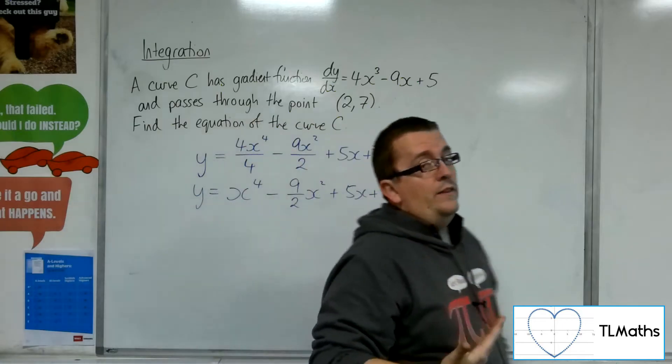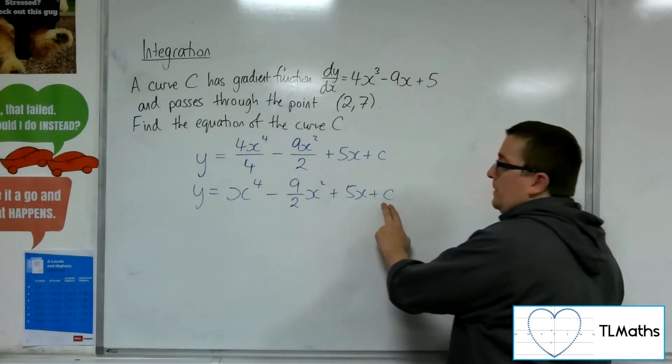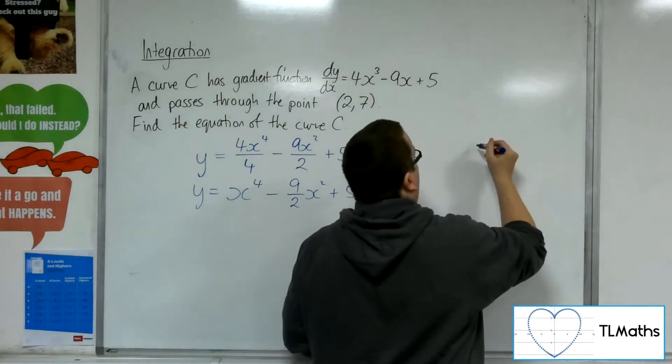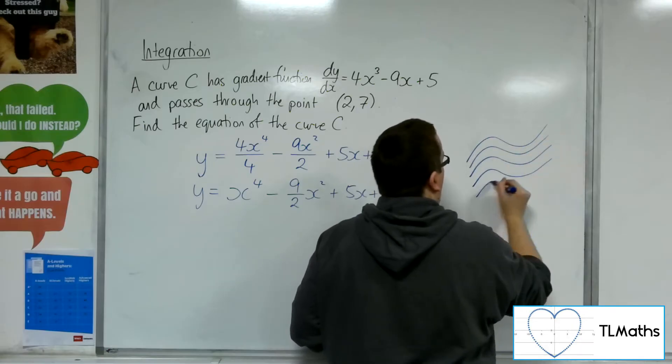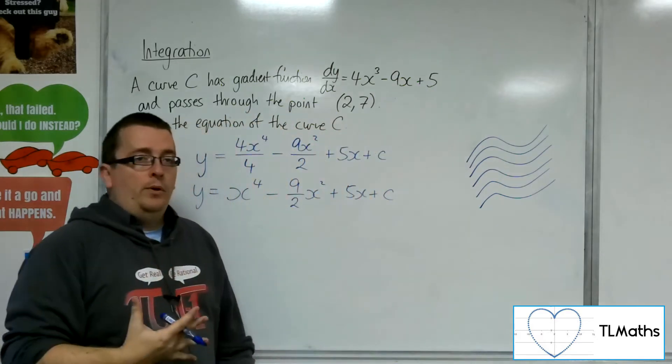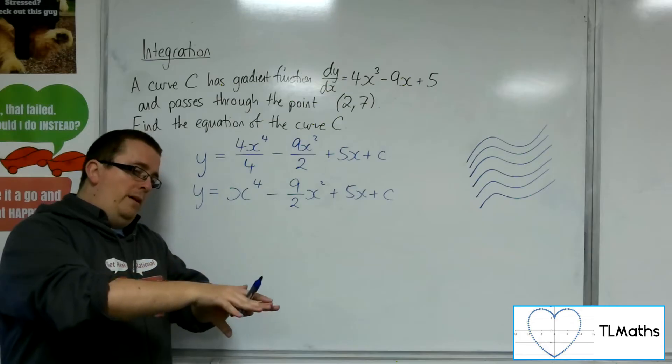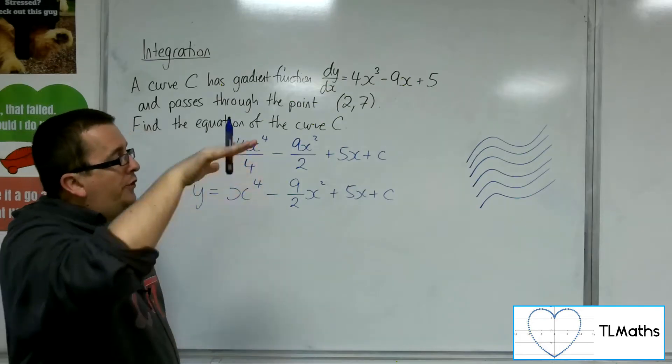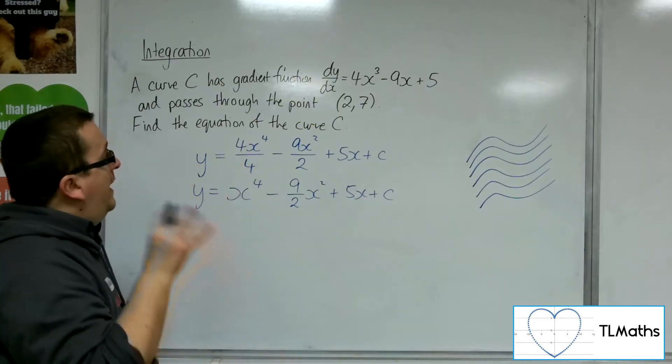Okay, now the reason why this is called a general solution is because that C could potentially be anything. And so you've got yourself here a whole family of curves. Each one, the same exact shape as the next, but they're all kind of like piled on top of one another. Because there's no value of C that is given.